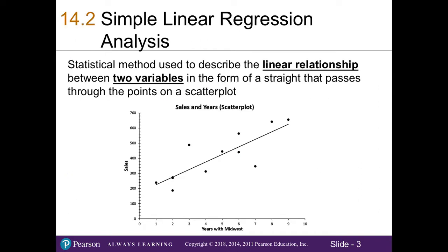Simple linear regression is a statistical method used to describe the linear relationship between two variables. In section 14.1, you learned how to develop a scatter plot. This continues our analysis by looking to see if there is a linear relationship that can be plotted on our scatter plot.